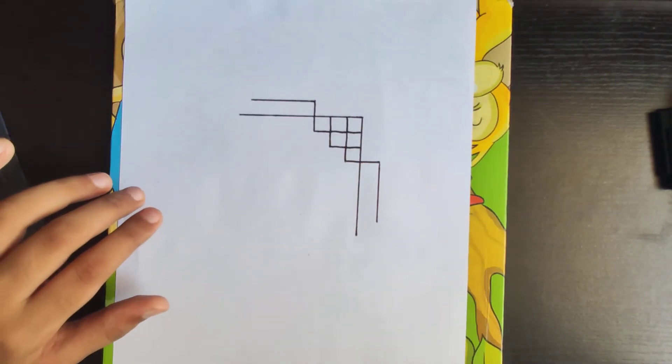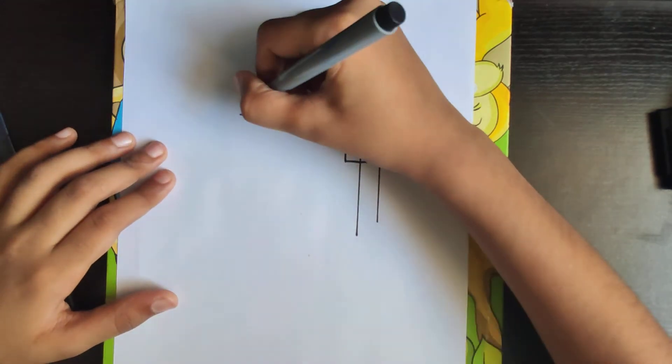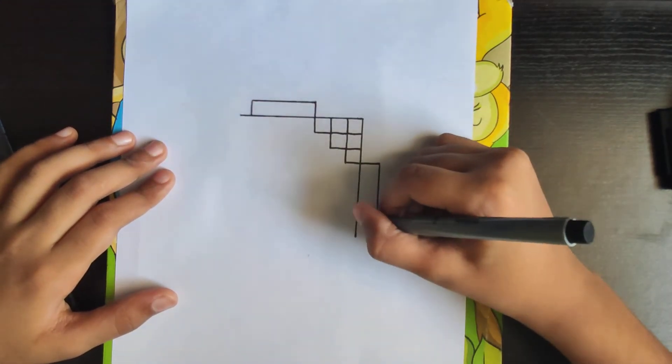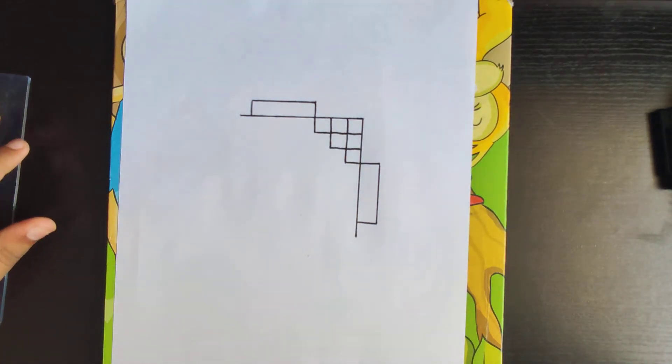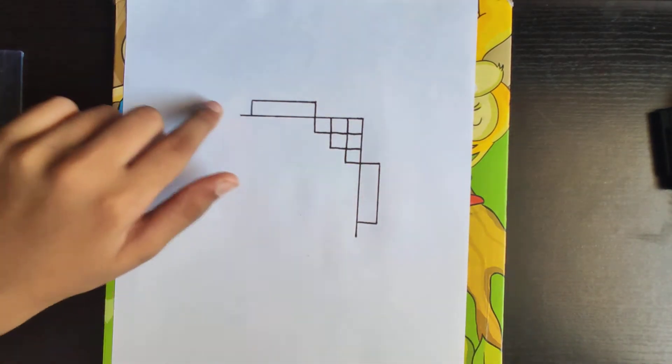Let's continue now. Add these lines like this, making two rectangles.